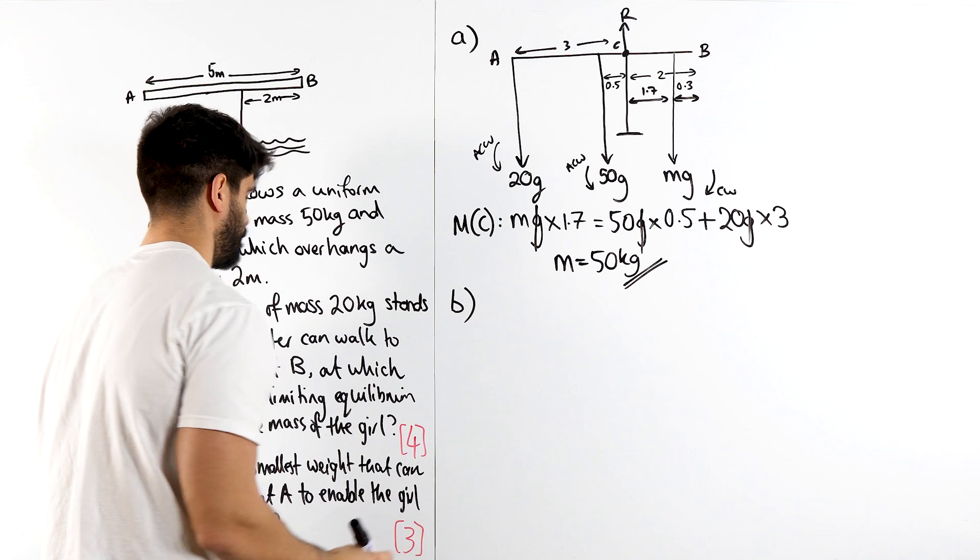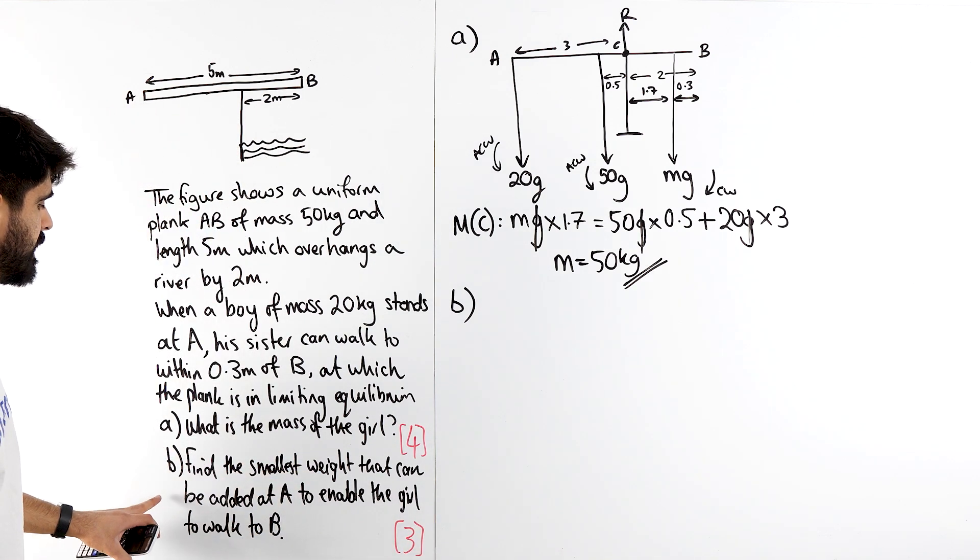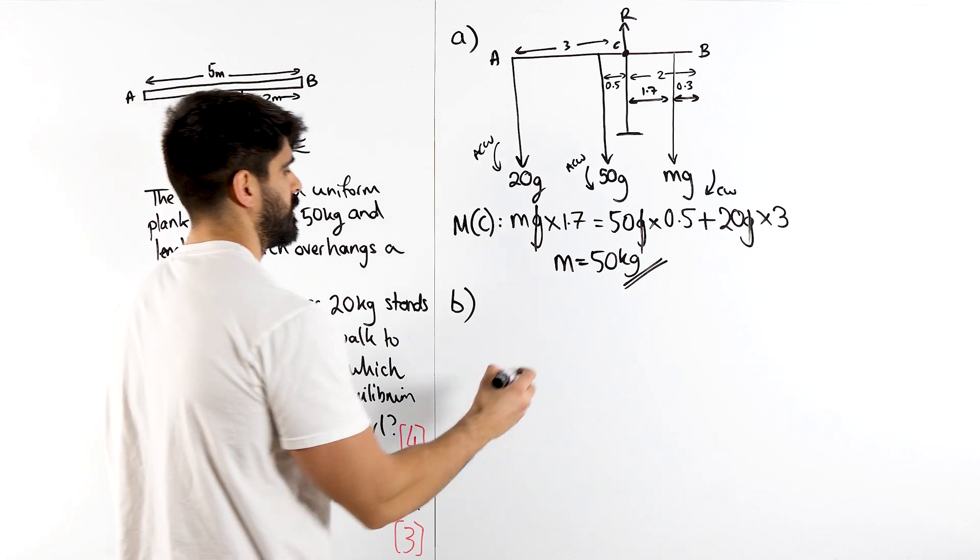What's part B? Find the smallest weight that can be added at A to enable the girl to walk to B. Let's do a new diagram.